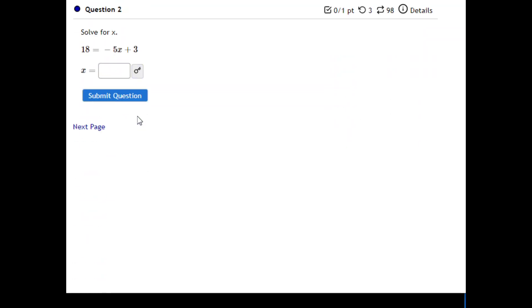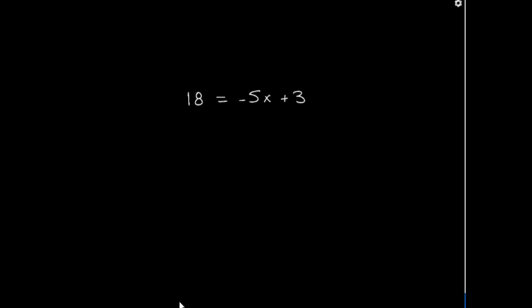Now let's take a look at the next question that I have here, which is 18 is equal to negative 5x plus 3. And you'll notice again, now this is flipped. My variable is over here on the right-hand side of my equation.